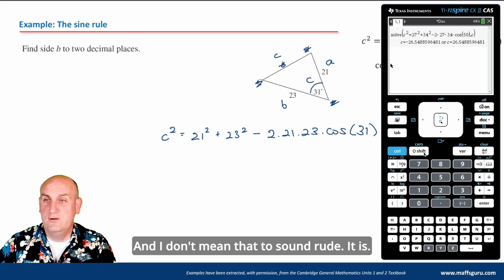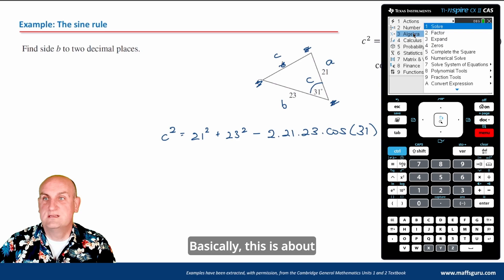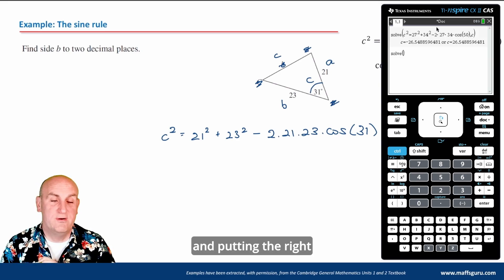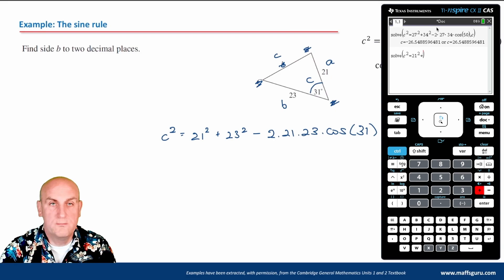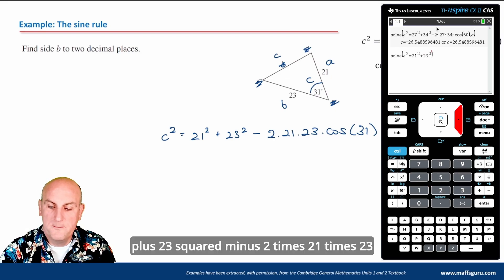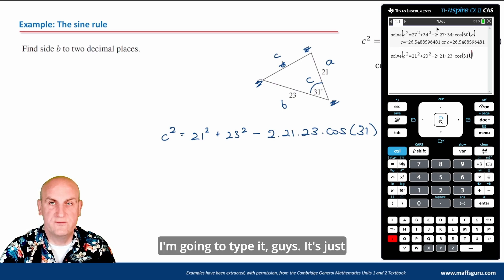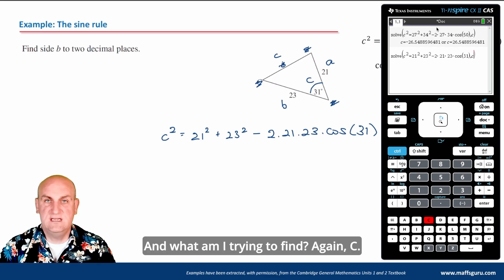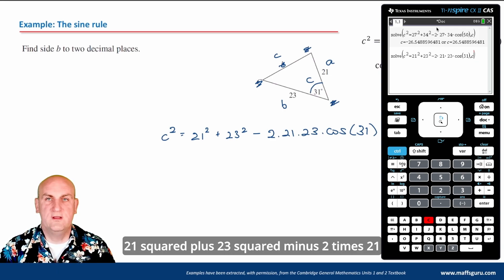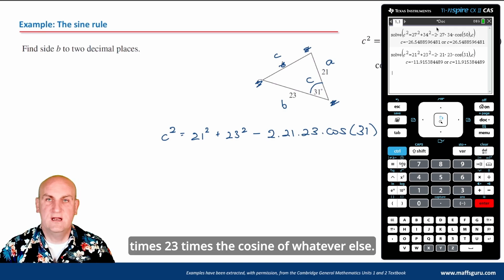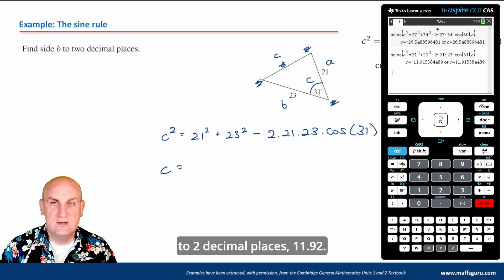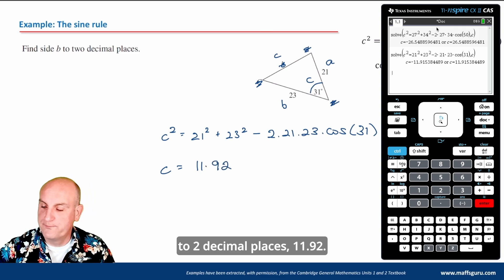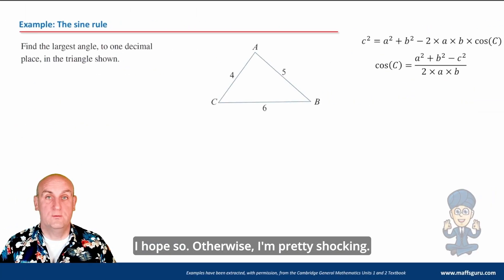This is all about choosing the right formula and putting the right numbers in the right place. Typing it into the calculator: 21 squared plus 23 squared minus 2 times 21 times 23 times cosine of 31. Again I get a positive and a negative answer — I can't have a negative side length, so c equals 11.92 to two decimal places.